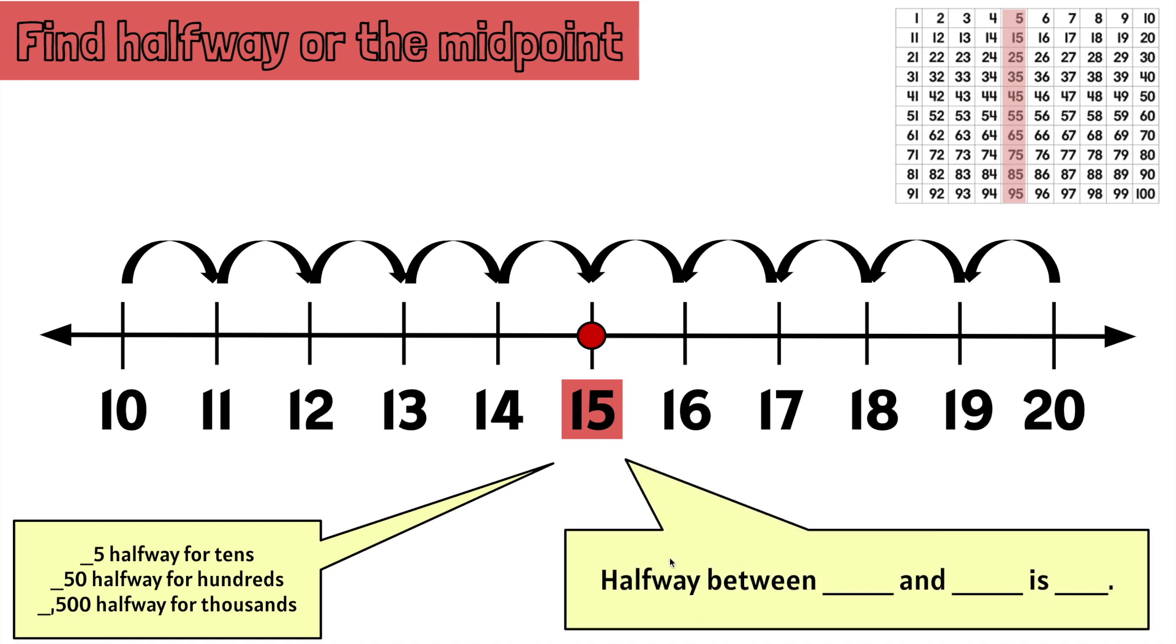We know that halfway between 10 and 20 is 15. Another way to figure out the midpoint between 10 and 20 is simply to add 10 plus 20 and cut that in half or divide by 2. We know that 10 plus 20 is 30 and 30 divided by 2 or cut in half is 15.